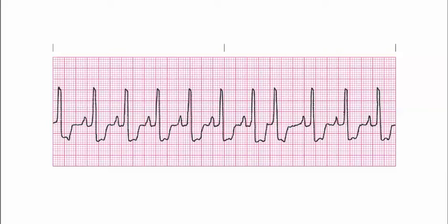This is a continuation of our previous lecture on identifying premature contractions and being able to identify where that premature contraction is coming from. In the previous one we talked about premature atrial contractions, and in this one we're going to look and see what we can find. When I'm starting my EKG interpretation, I always count the rate first.